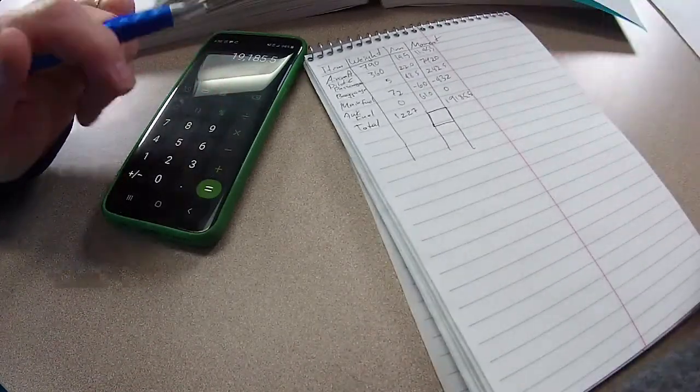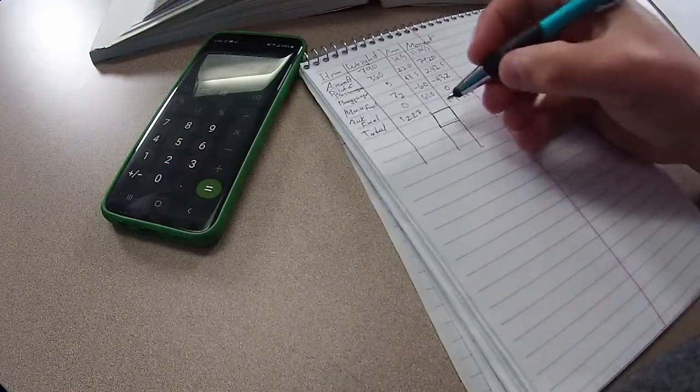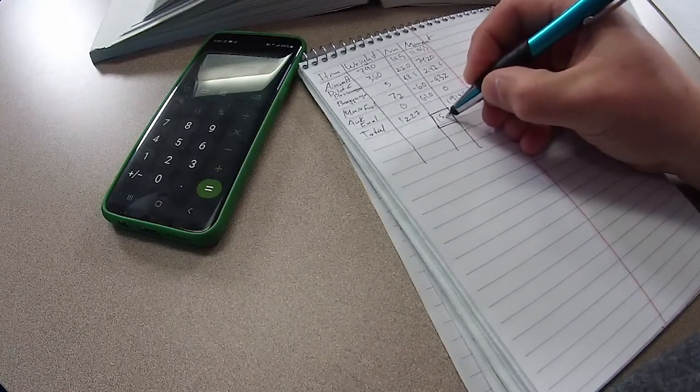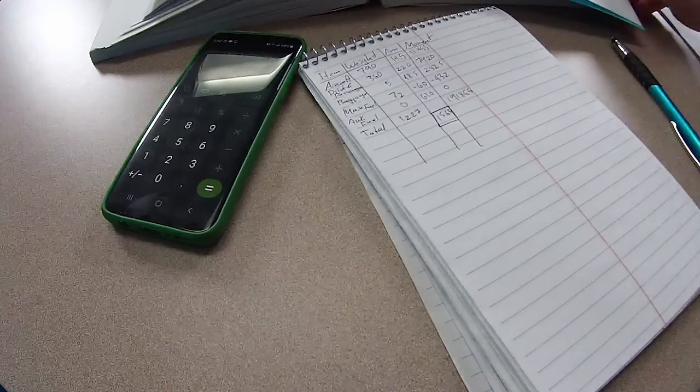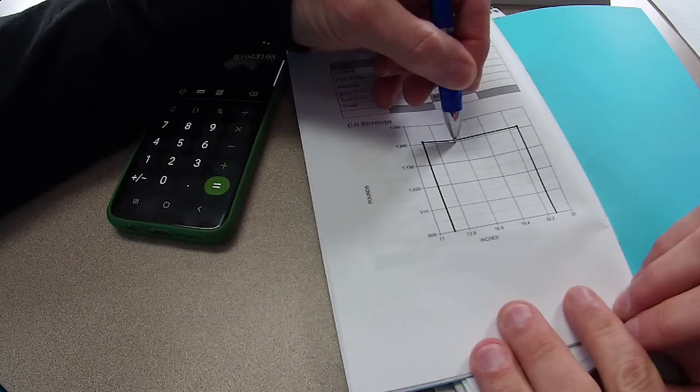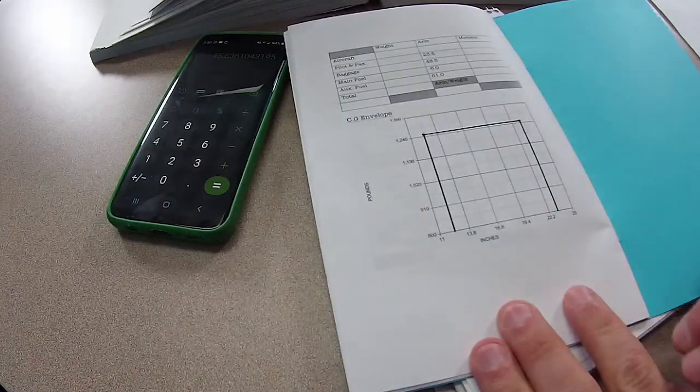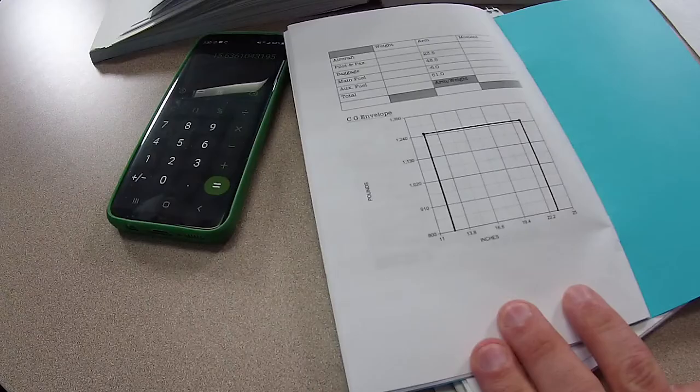Divided by our 1,227 is 15.63. So our weight would be right there, and 15.6 would be somewhere in there. So that shows us we're right in line.